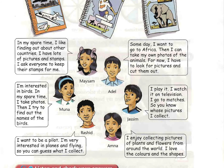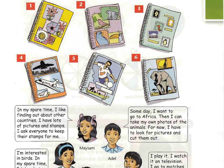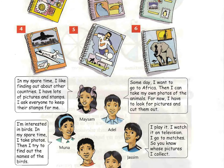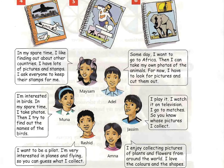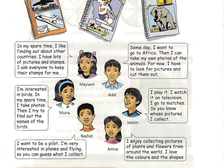I'm Munna. I'm interested in birds. In my spare time I take photos, then I try to find out the names of birds. Scrapbook two is mine. I'm Jasim. I play it, I watch it on television, I go to matches — so you know whose pictures I collect. Scrapbook five is mine.